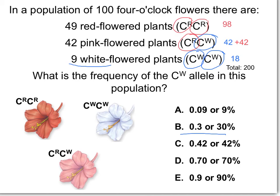This gives us a total of 200 alleles in the entire population — 100 individuals, each with two alleles, equals 200 total alleles. We can calculate the frequency of the recessive alleles by adding 42 plus 18, which equals 60, divided by 200. That gives us Q equals 0.3, the same result as the previous formula.